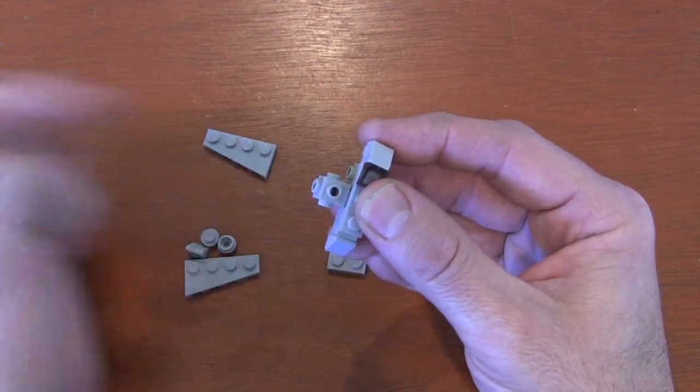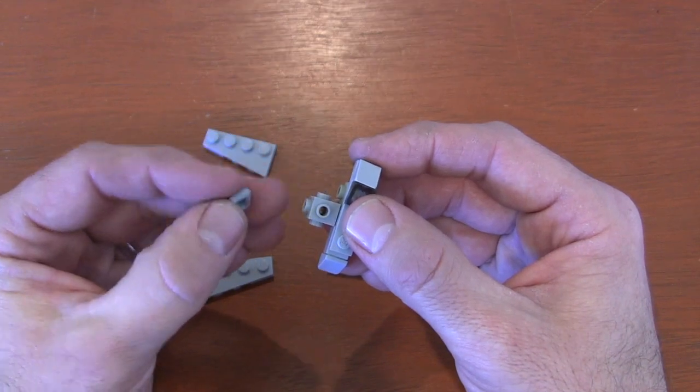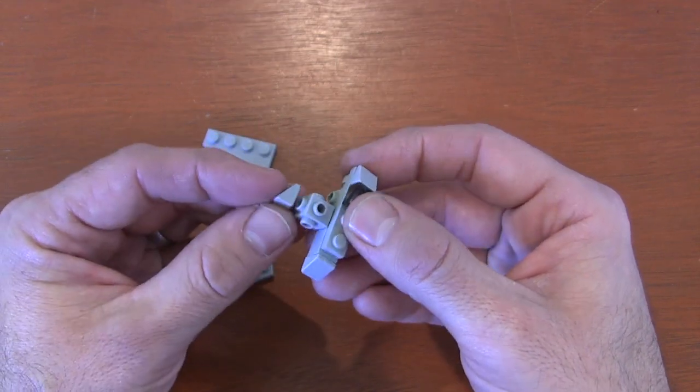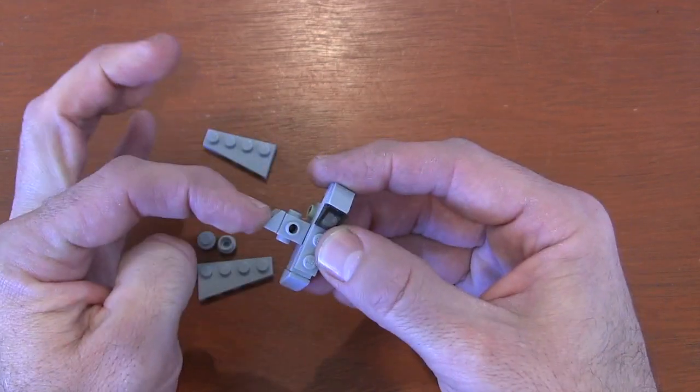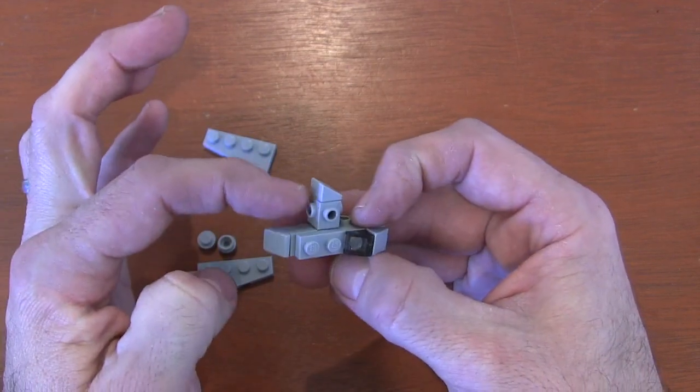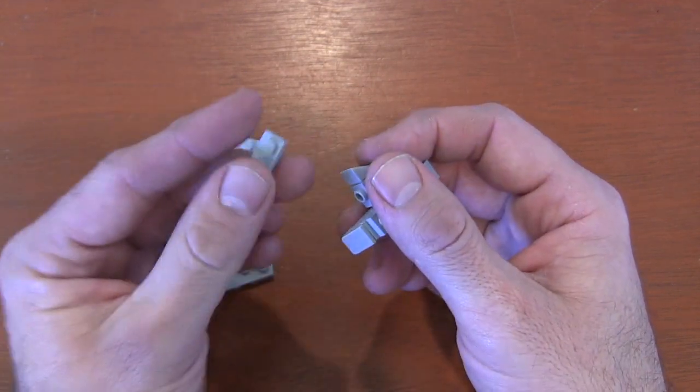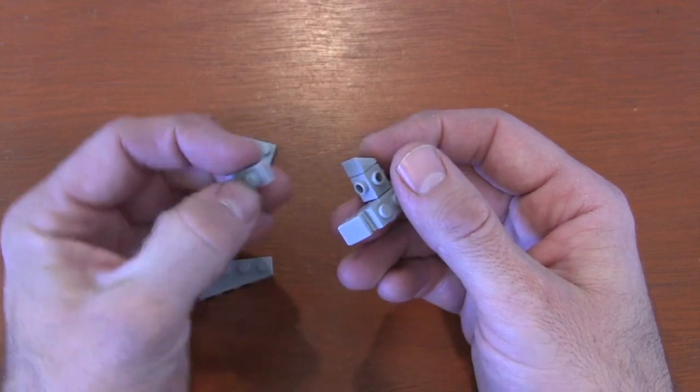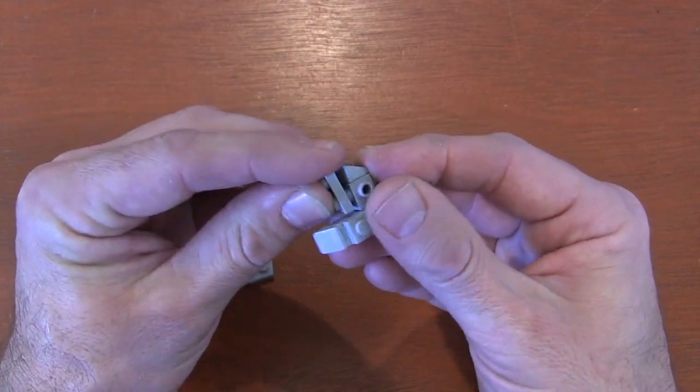On top of that Travis brick, get a slope piece and position it so the tall end is in the front sloping to the back. Now to cover this up, get a 1x2 plate and put it right across.